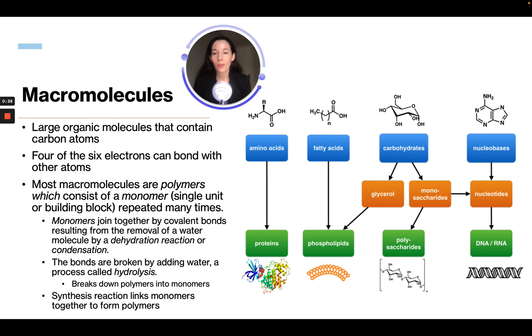Monomers join together by covalent bonds resulting from the removal of water molecules by dehydration reaction or condensation. The bonds are broken by adding water, a process called hydrolysis, which breaks down polymers into monomers. And synthesis reactions link monomers together to form polymers.